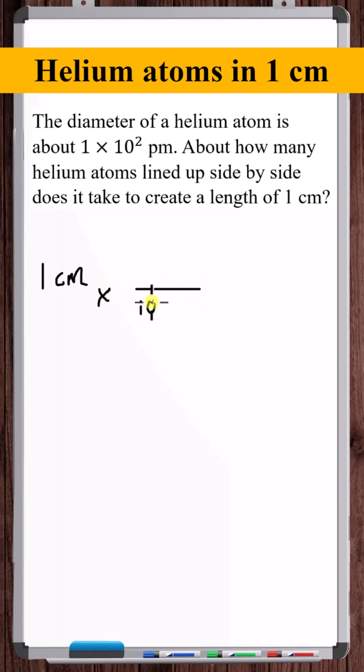So we know that we have 10 to the second centimeters in 1 meter. 100 centimeters in 1 meter. And we know that we have 10 to the 12th picometers in 1 meter. So now we're in picometers. We started with 1 centimeter and now we've gotten to picometers.